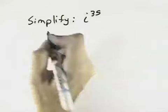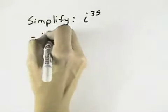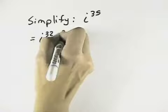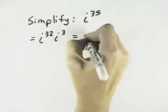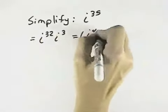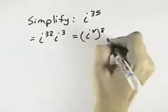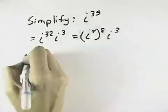So 35, if we reduce it to something that's a power of 4, we could say i to the 32nd power, that would leave 3 of them left over. Because i to the 32nd power is i to the 4th 8 times, and then we have i cubed left over.